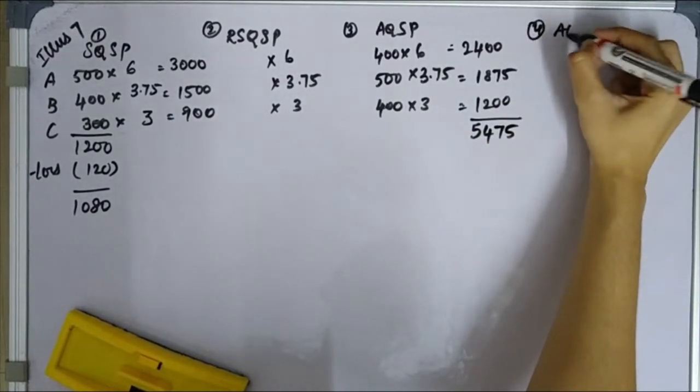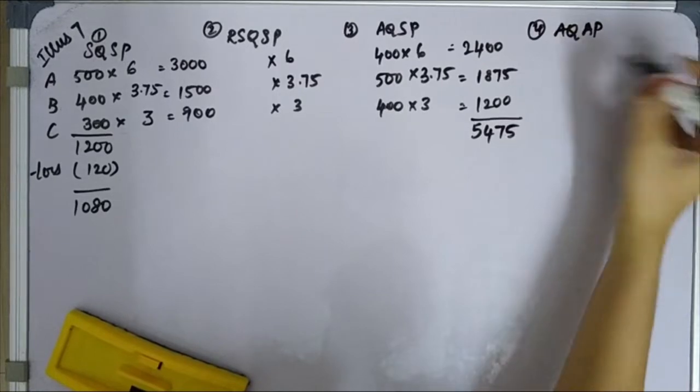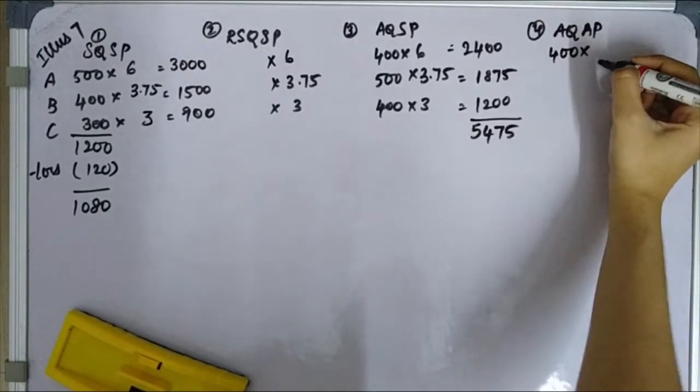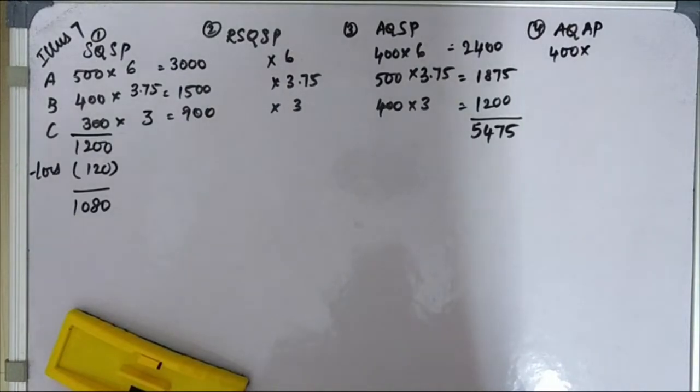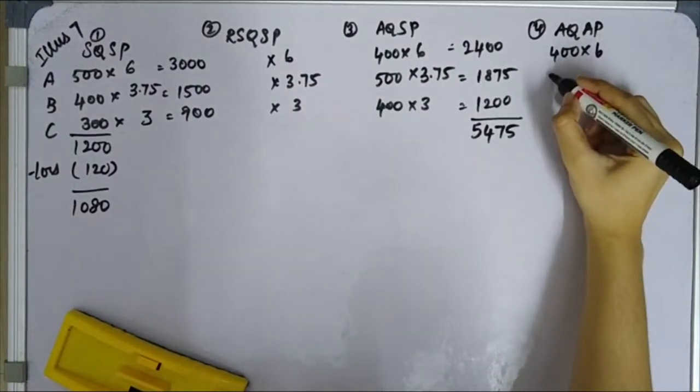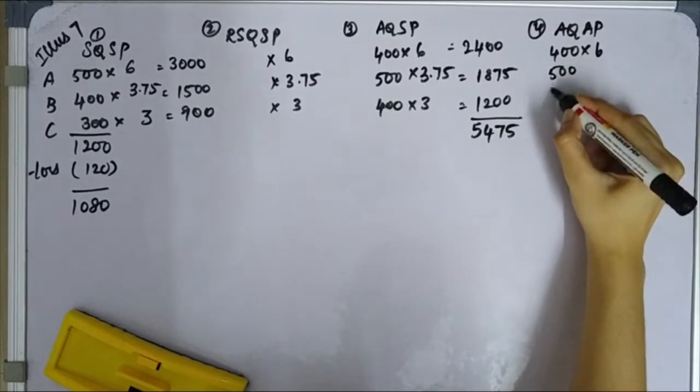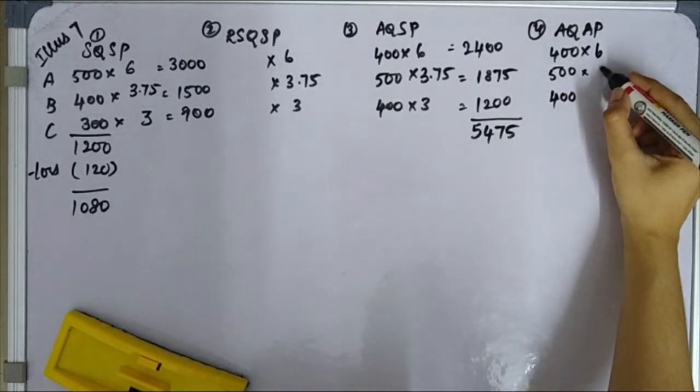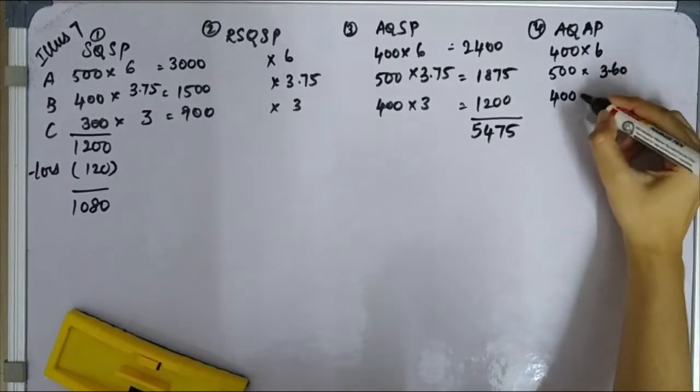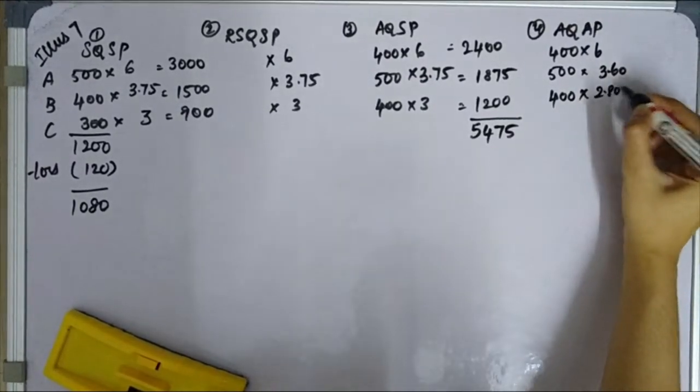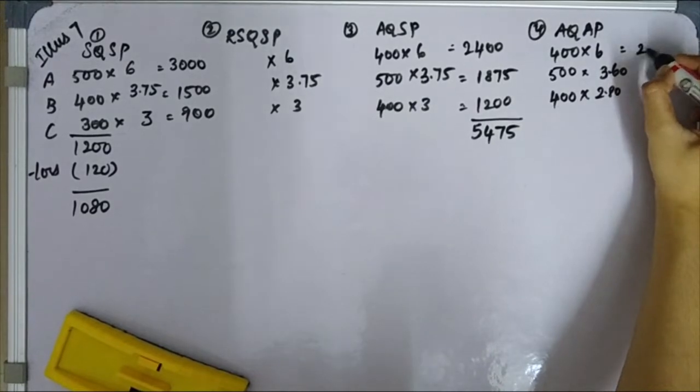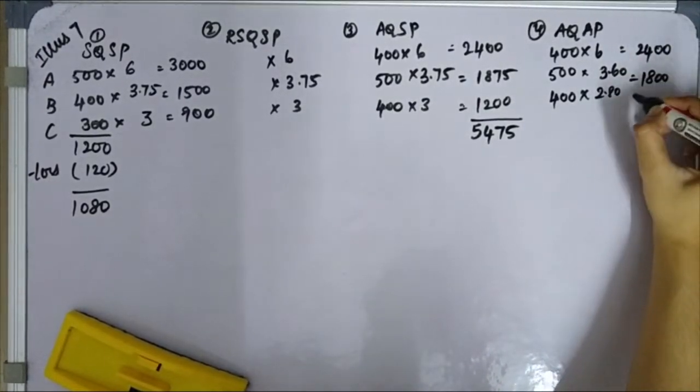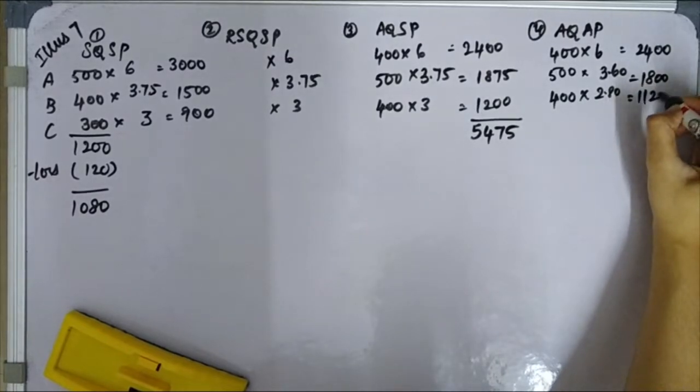Next, the very last one is AQ AP. Actual quantity, actual price is already given in the question. Actual price is 6, quantity 500. For material B, 400 units at actual price 3.60, and for C, actual price is 2.80.